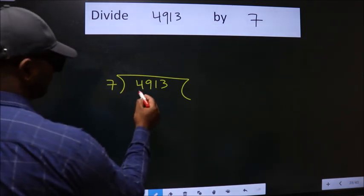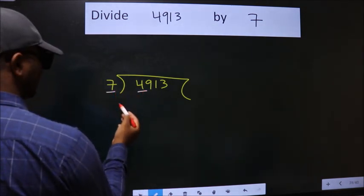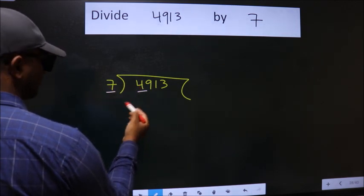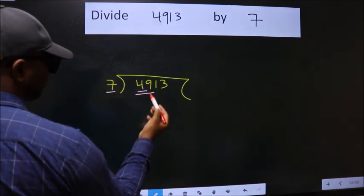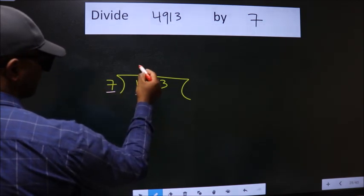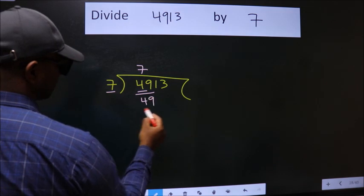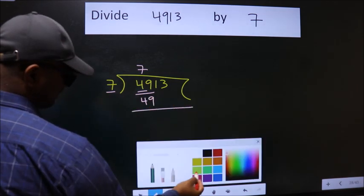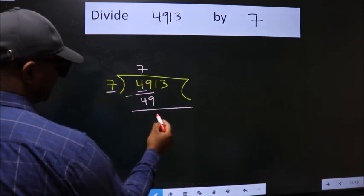Here we have 4. Here 7. 4 is smaller than 7, so we should take two numbers, 49. When do we get 49 in 7 table? 7 times 7 is 49. Now we should subtract. We get 0.